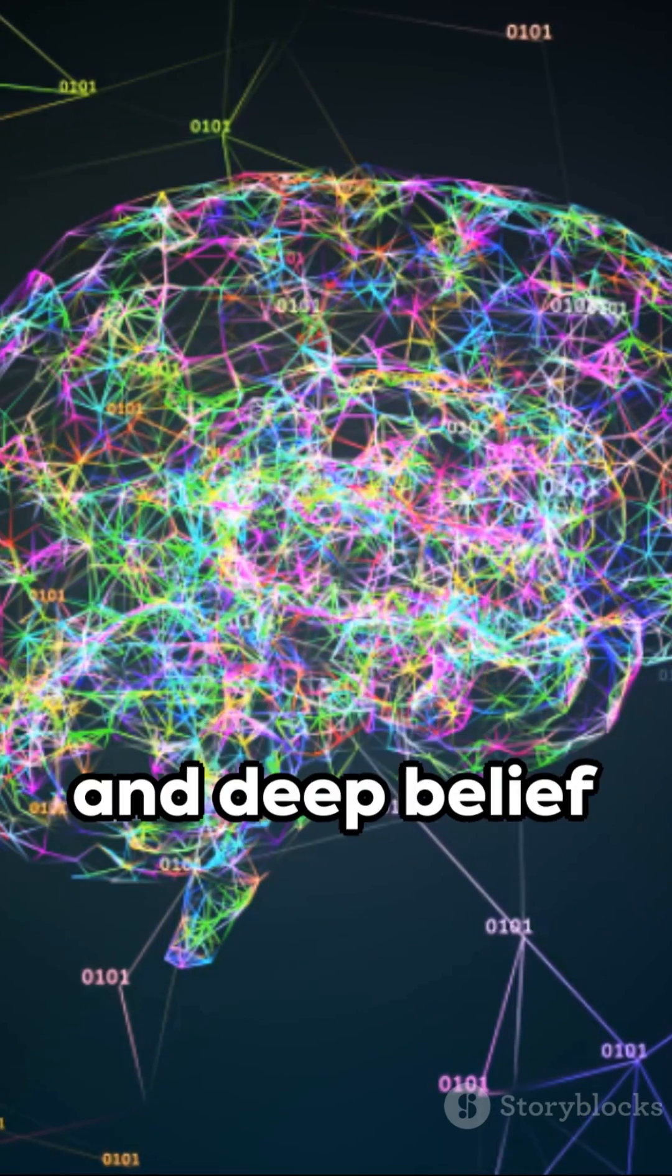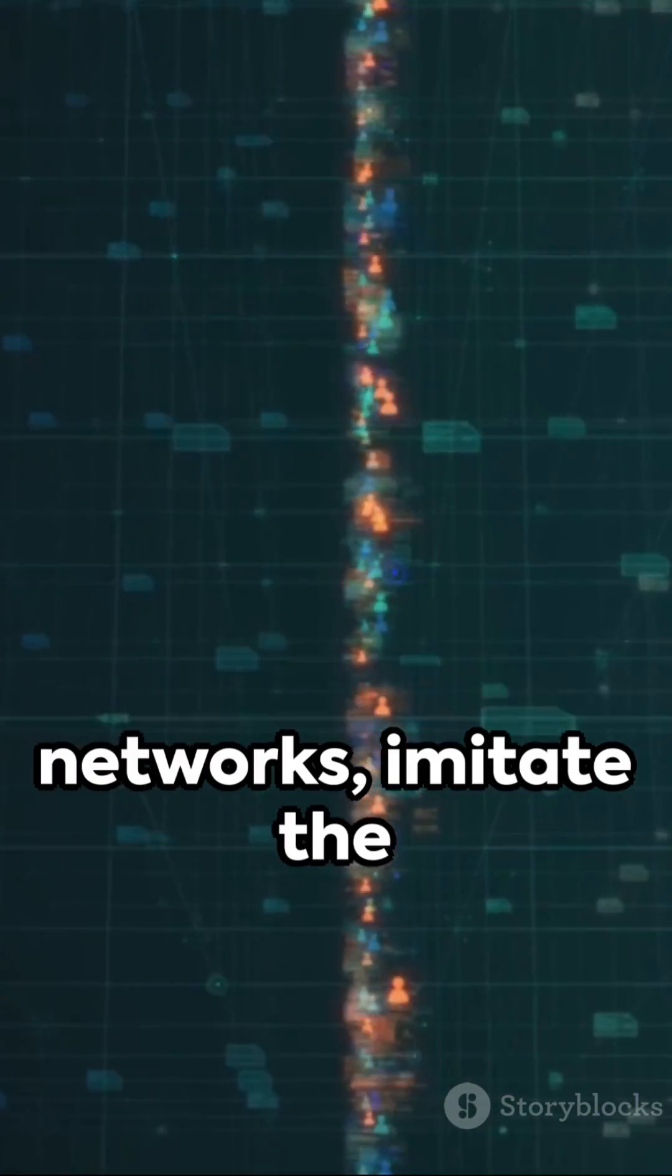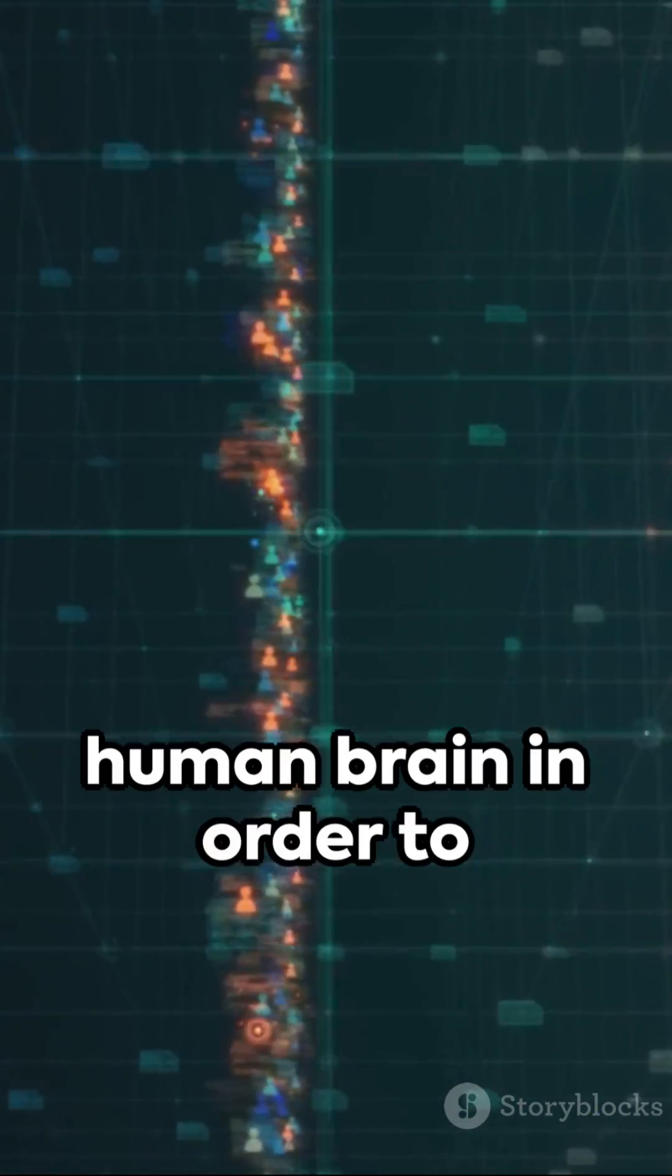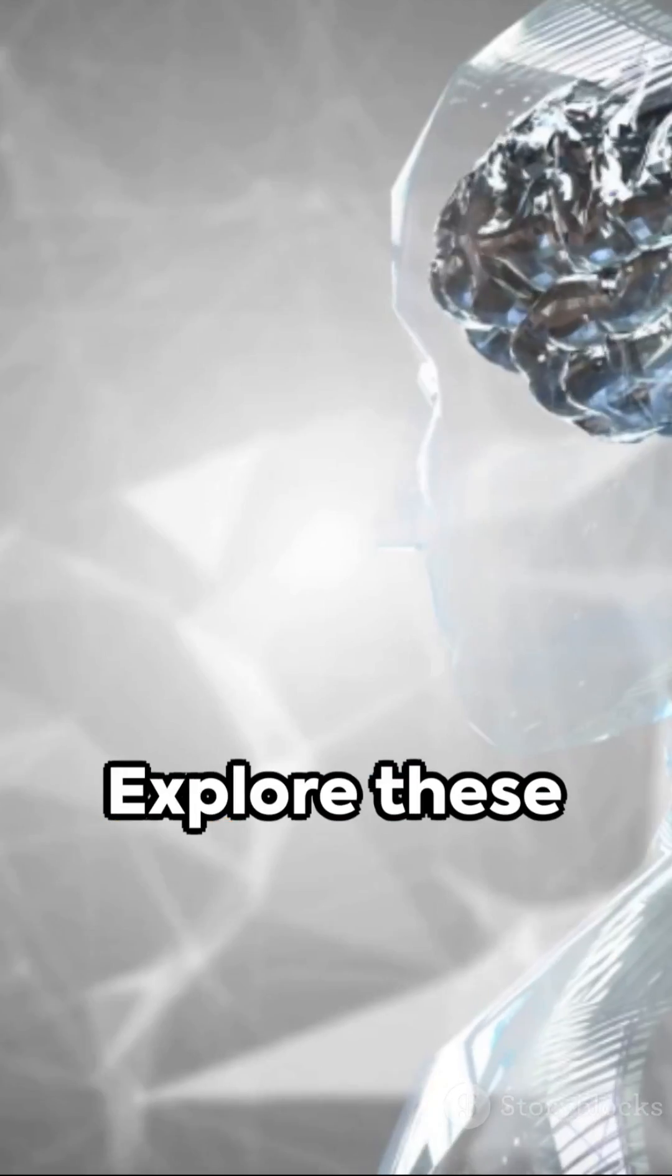Neural networks, such as self-organizing maps and deep belief networks, imitate the functioning of the human brain in order to identify patterns.